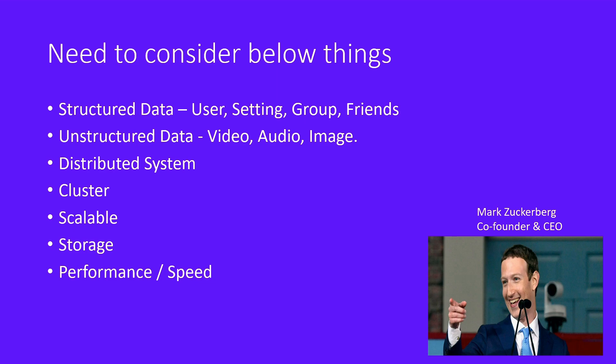A distributed system means one video or file is copied to multiple different systems. Such a system is known as a distributed system — one copy at multiple places. In the background, it creates multiple copies for disaster recovery and high availability. In HDFS (Hadoop Distributed File System), files are distributed in multiple chunks, gathered back at one place, and shown to the user. I will create a separate session on distributed systems so you get a complete understanding.